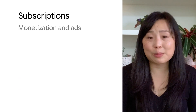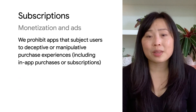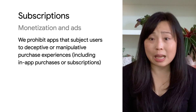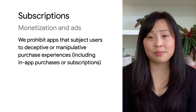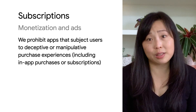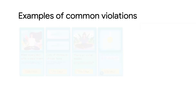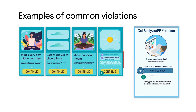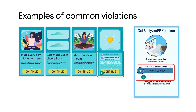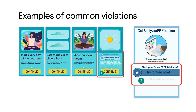Next, we're clarifying our subscriptions policy to more explicitly prohibit apps that subject users to deceptive or manipulative purchase experiences, including in-app purchases or subscriptions. This helps protect users from misleading or deceptive subscription plans, and it helps reduce high refund rates for developers. Here are some common violations. The first violation is showing multiple screens in the purchase flow that lead users into inadvertently clicking the final Continue button to subscribe. The second violation is leading users to think that the plan is free by making the costs that users will be charged after the trial hard to read.